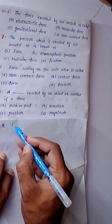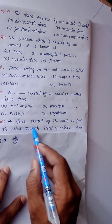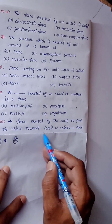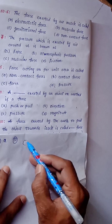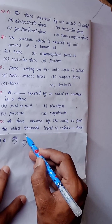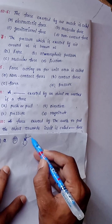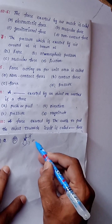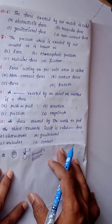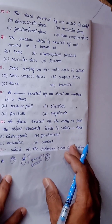Question number 10: A force exerted by the earth to pull the objects towards itself is called — it is gravitational force, the force of attraction. So option B is the right answer.